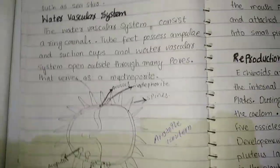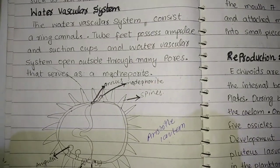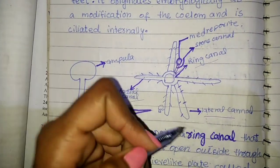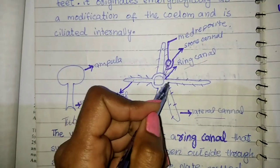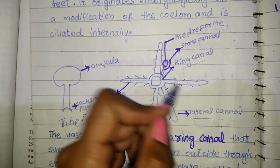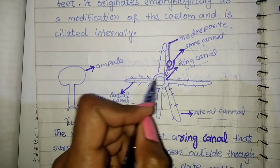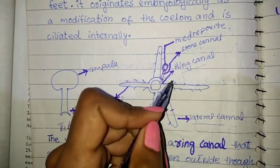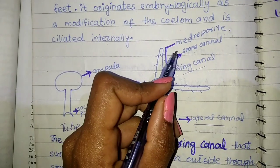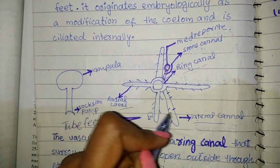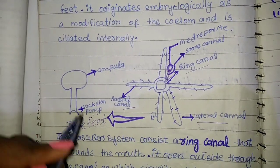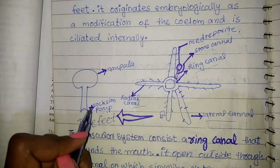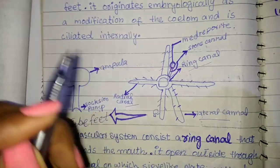Now I will show you the diagram of the water vascular system. At the center is the ring canal. Extending from it is the radial canal, lateral canal, and the stone canal. There is also the madreporite plate. The tube feet consist of a suction cup and ampulla.